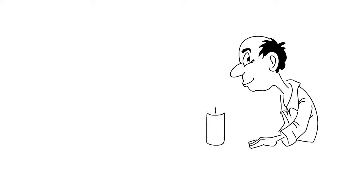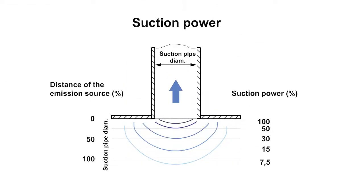The chart demonstrates how suction power diminishes with increasing distance. If the distance is as great as the suction pipe diameter, the suction power amounts to only 7.5%. To benefit from the full suction power, the distance must not exceed 12% of the suction pipe diameter.